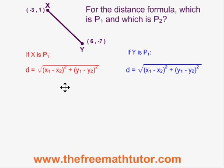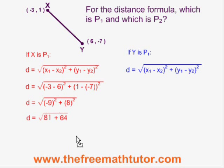In the red formula, I am making X point 1 and that means x1 is negative 3, y1 is 1, x2 is 6, y2 is negative 7. When we plug these numbers in and simplify, we end up with negative 9 squared plus 8 squared, which gives us 81 plus 64 for 145. The square root of 145 is our distance and it is 12.04 units.